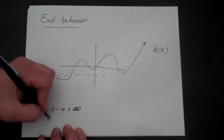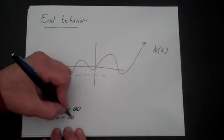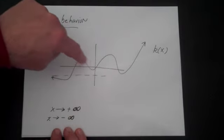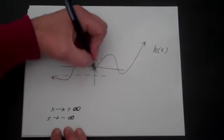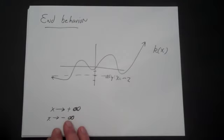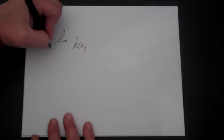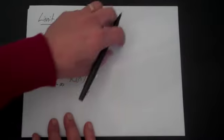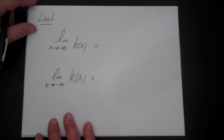Now as x goes in the other direction — as it goes toward minus infinity — it also behaves a certain way, but in this case it gets closer and closer to some number. In this case, there's an asymptote at x equals minus 2. That's what we mean by end behavior in general. The way we describe end behavior is we use what's called limit notation: the limit of k of x as x goes to infinity, and the limit of k of x as x goes to minus infinity.